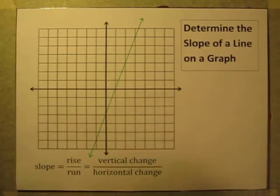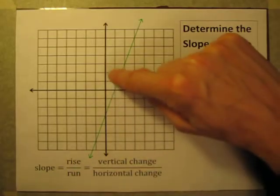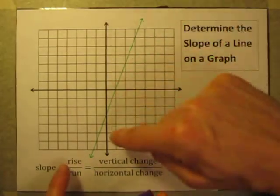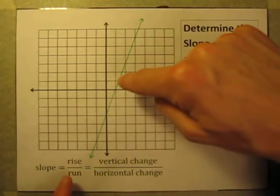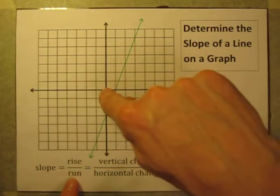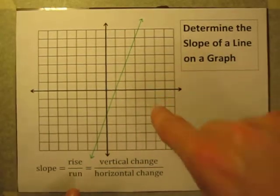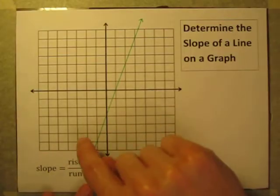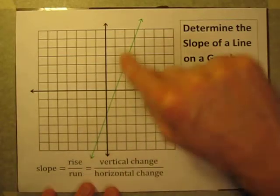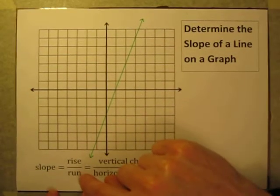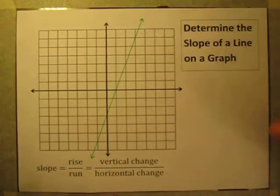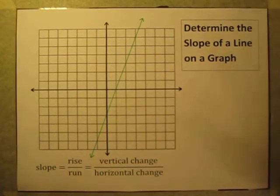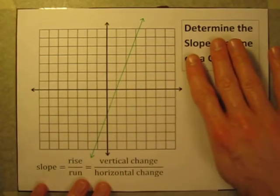To describe steepness we use rise over run. The rise is how much the line goes up or down, and the run is how much it moves side to side. Whenever I'm calculating slope, I always look at the line from left to right, so I always think of the run as going to the right — just for consistency.